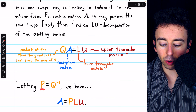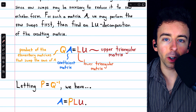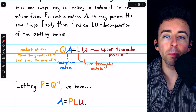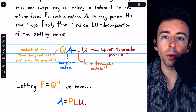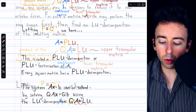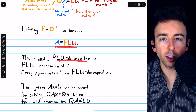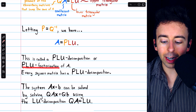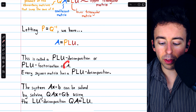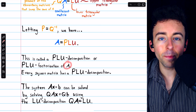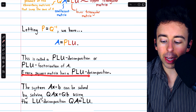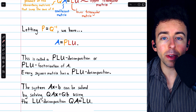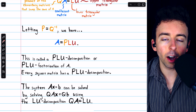P is called a permutation matrix, the idea being that it permutes the rows of A. So that's a PLU decomposition, or also called a PLU factorization, of the matrix A. Every square matrix, in fact, does have a PLU decomposition.